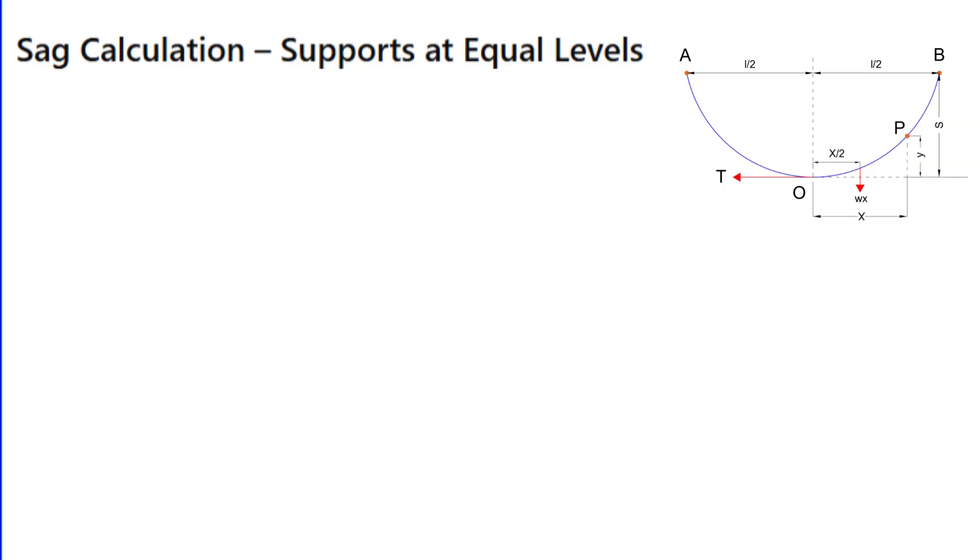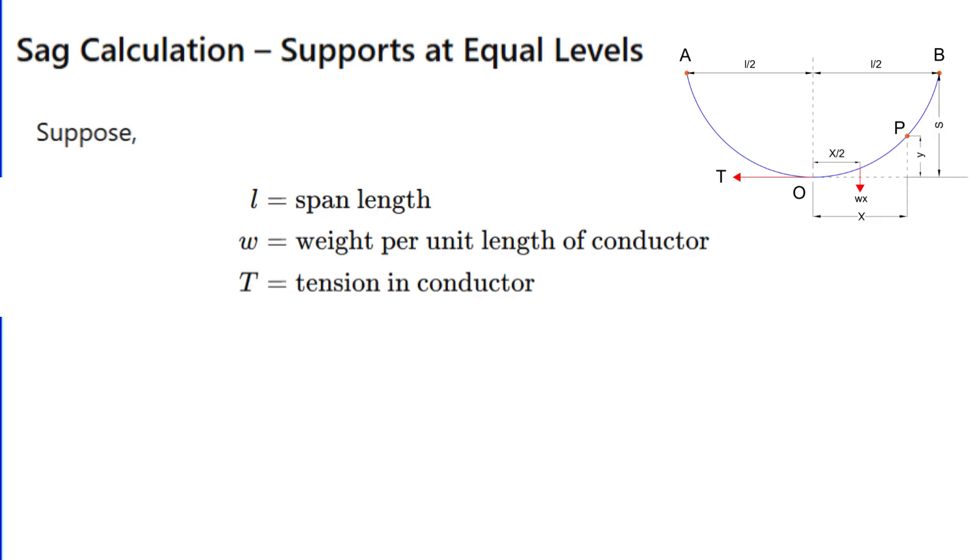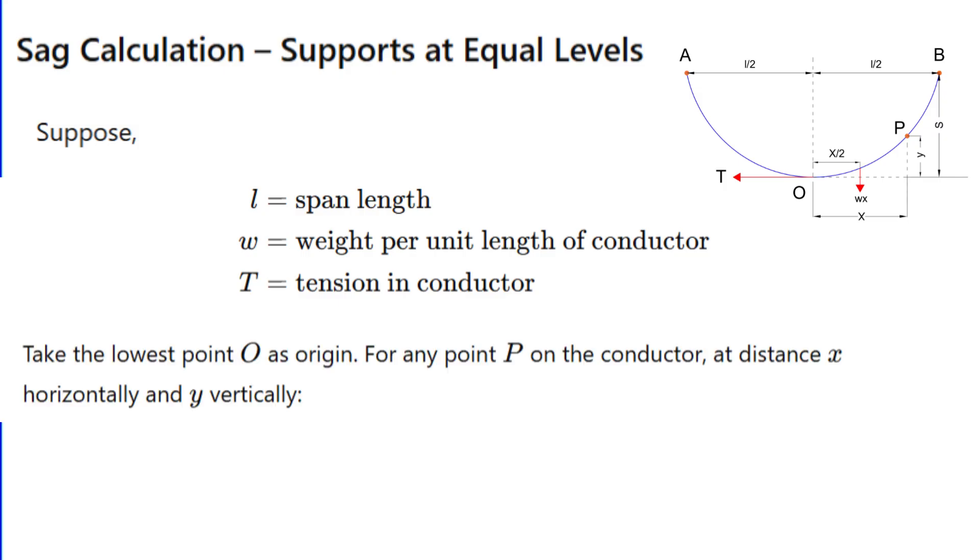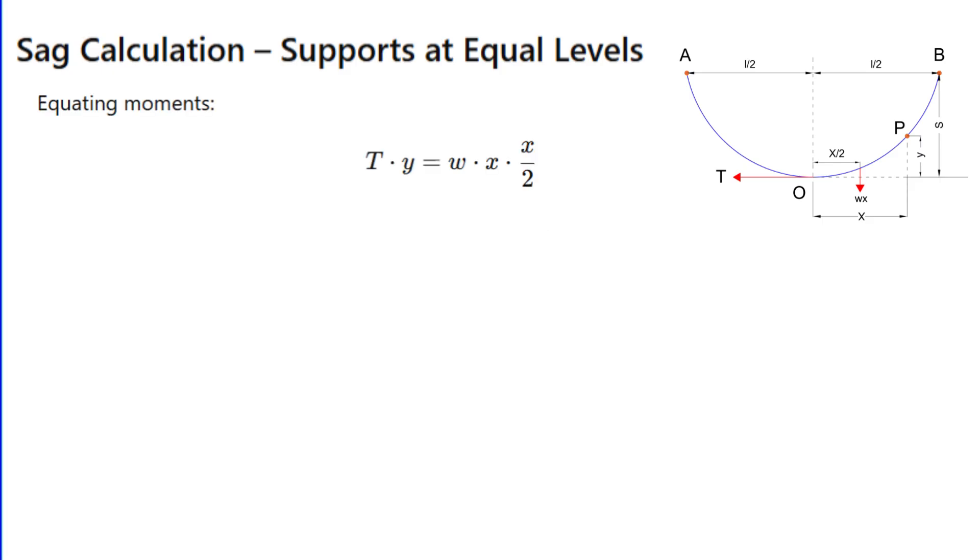Let's derive the formula step by step. Suppose the span length is l, the weight per unit length of conductor is w, and the tension in conductor is T. Take the lowest point O as origin. For any point P on the conductor at distance x horizontally and y vertically, the weight of portion OP is w times x, and this acts at a distance x/2 from O.